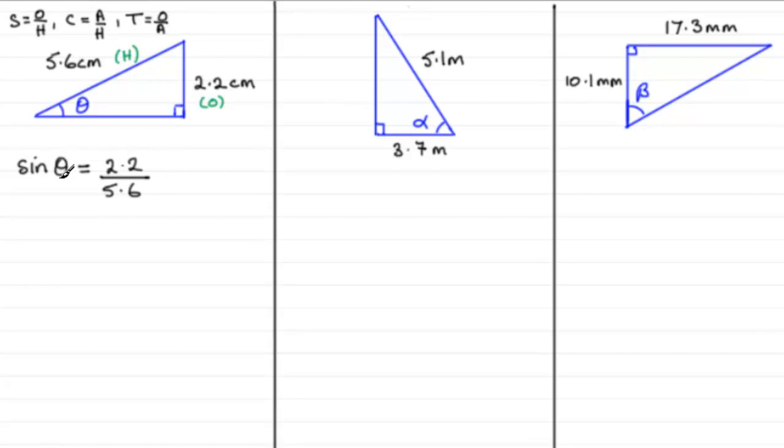Now to work out what theta is, we have to remove the sine in this case. And what we do is we take something called the inverse sine to both sides. And the inverse sine of sine theta just leaves us with theta. And on this side, we write the inverse sine, it's written like this, sine with a little minus 1 up here, of 2.2 divided by the 5.6.